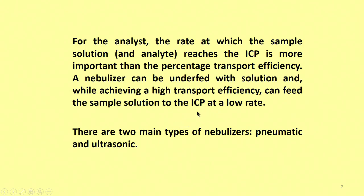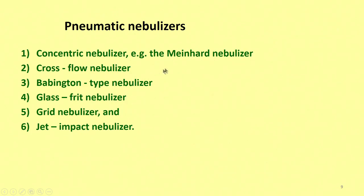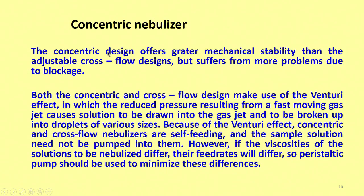There are two main types of nebulizers: pneumatic and ultrasonic. The ultrasonic nebulizer has a piezoelectric transducer — solution hits it, forms an aerosol, bigger droplets fall into the drain, and argon carries the fine aerosol. Among pneumatic types — concentric (Meinhard), cross-flow, Babington, glass frit, grid, and jet-impact nebulizers — the Babington and Meinhard nebulizers are usually the most commonly employed and available in commercial instruments.